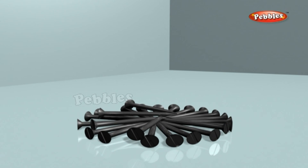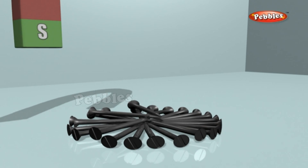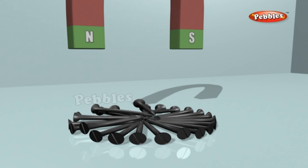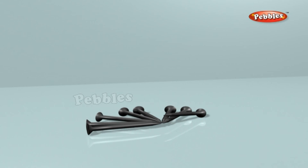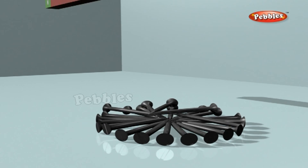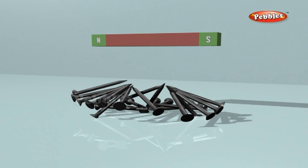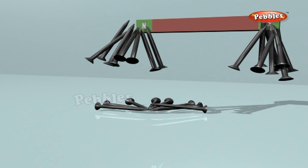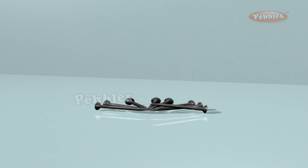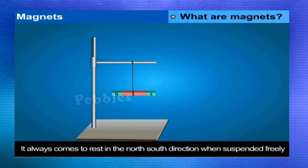Any substance which possesses the following two properties is called a magnet: it attracts small pieces of iron towards itself, and it always comes to rest in the north-south direction when suspended freely.